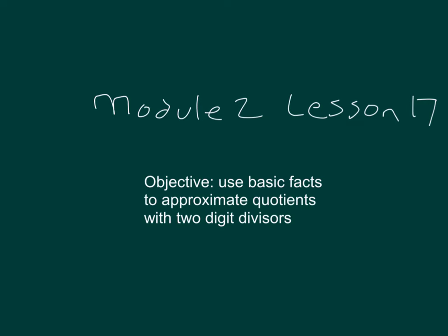The objective is to use basic facts to approximate quotients with two-digit divisors.